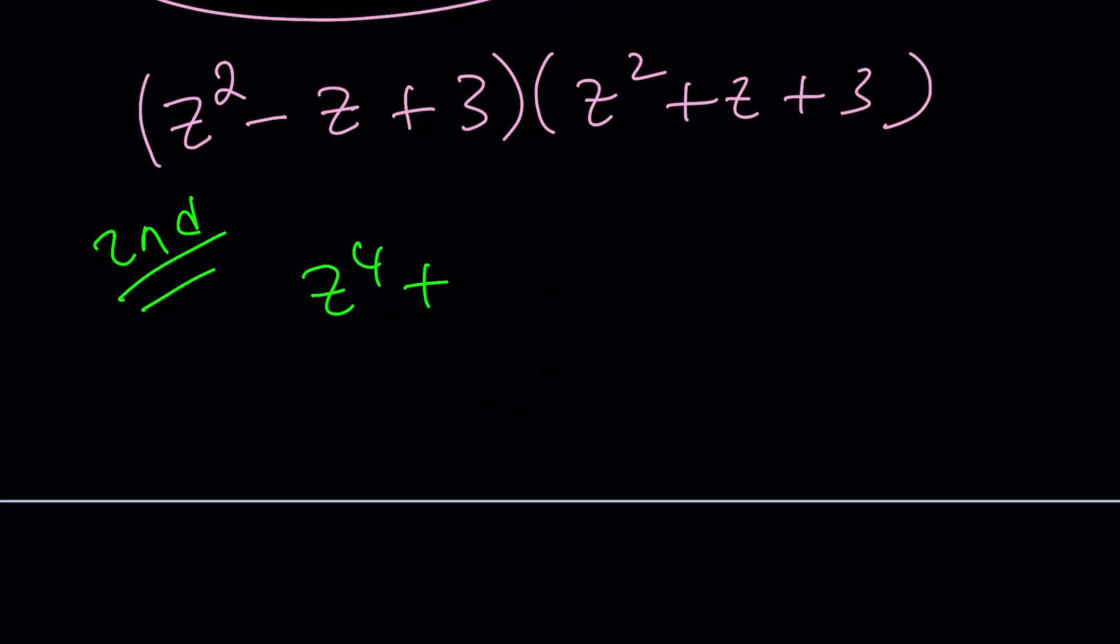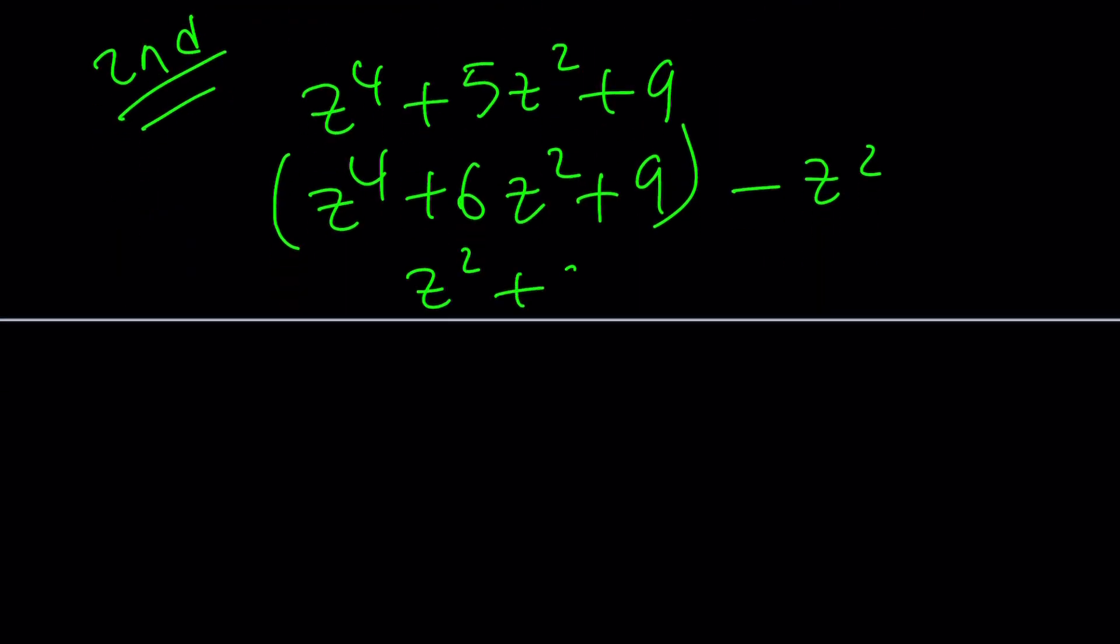Let's talk about the second method real quick, and it's actually really quick. We can turn this into a perfect square just by adding z squared and subtracting it. Now I have a perfect square z squared plus 3, and this is factorable by difference of two squares. That gives us the exact same solution as before.